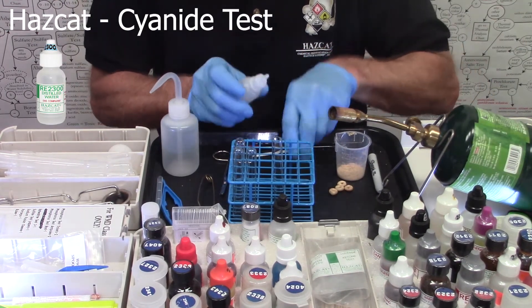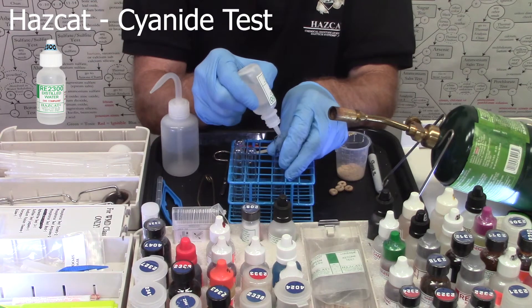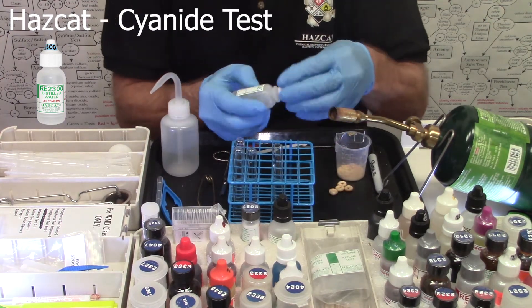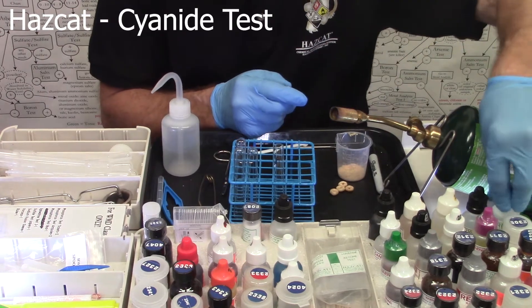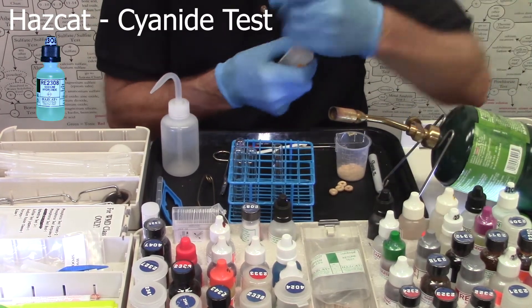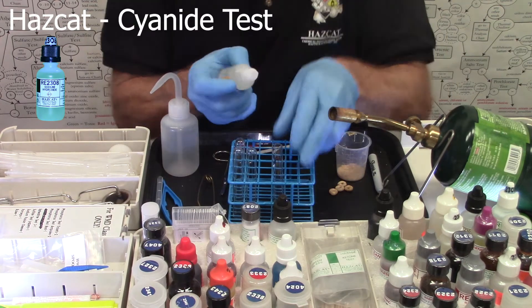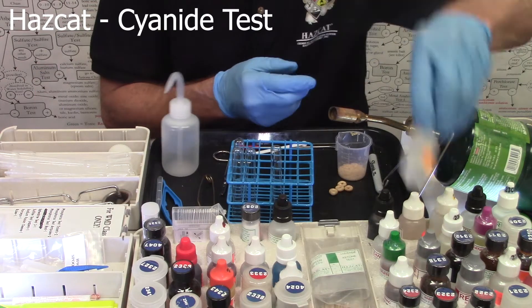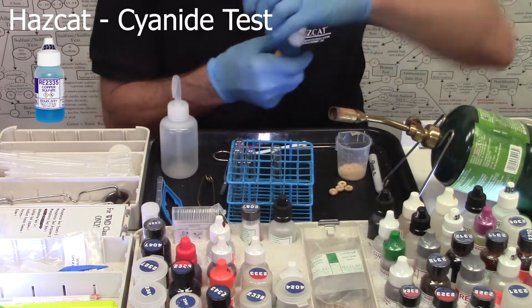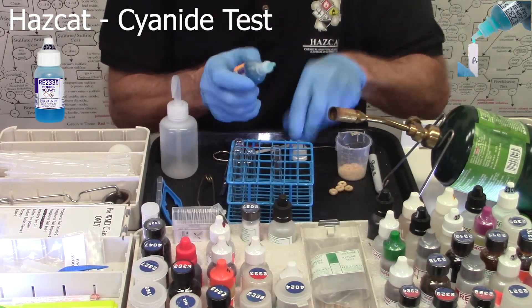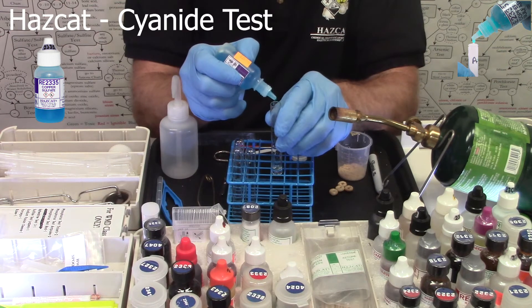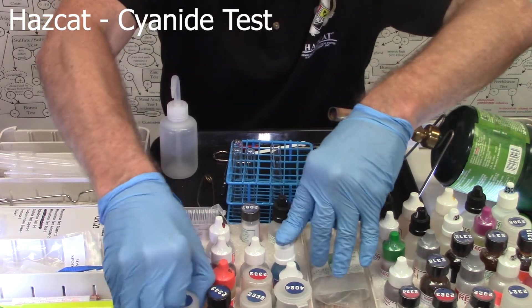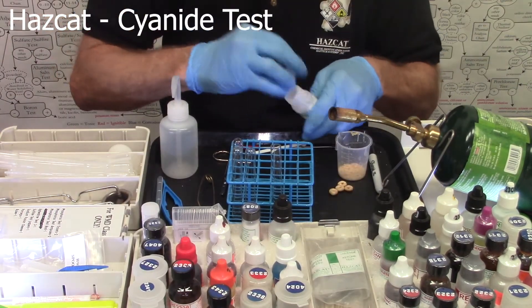We'll add one half inch of RE2300 distilled water. We're going to add two drops of RE2308, three drops of RE2335 copper sulfate solution, and one half spoonful of ammonium molybdate solid RE2344.